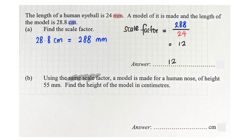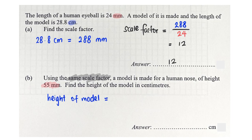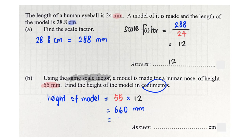Now that we have the scale factor, we find the model height for a human nose of 55 mm. The height of the model is 12 times 55, which gives 660 mm. Converting to centimetres: 660 divided by 10 equals 66 cm. And that's the end of this particular question.